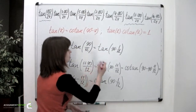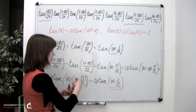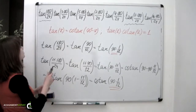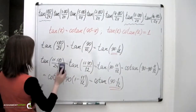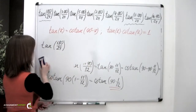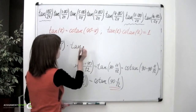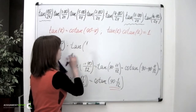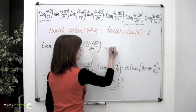You can notice that these arguments are the same. So multiplying this tangent and this cotangent gives us 1. We now know that tangent of 180 over 24 times tangent of 11 times 180 over 24 equals 1.